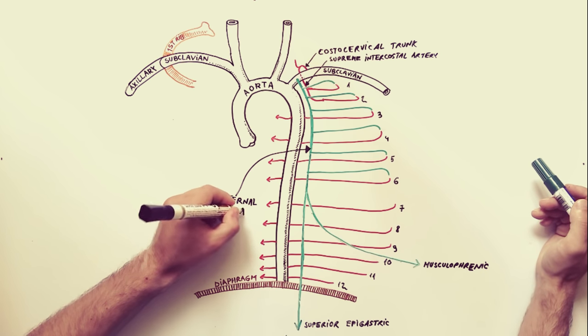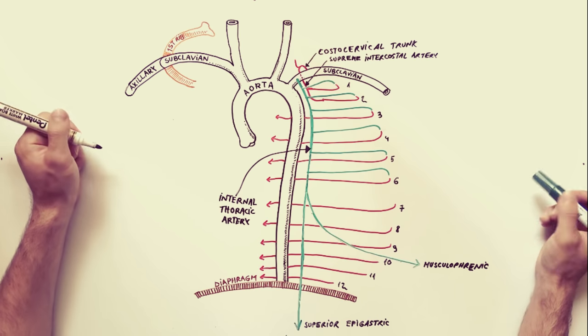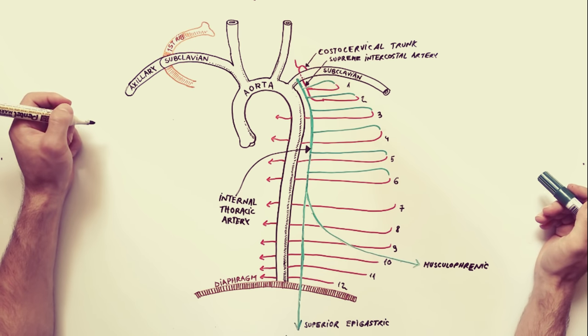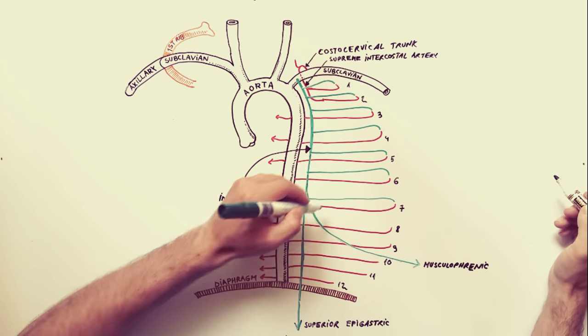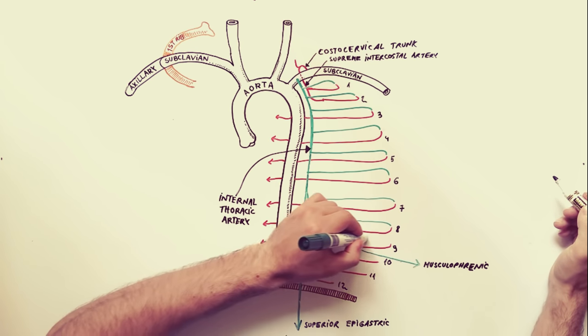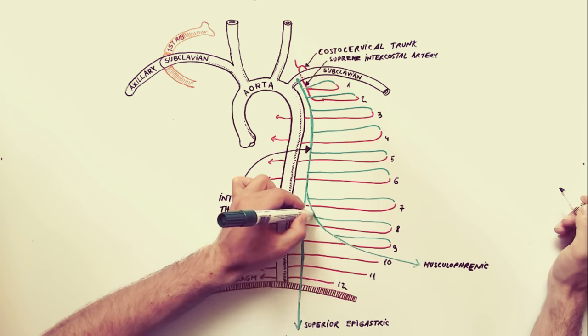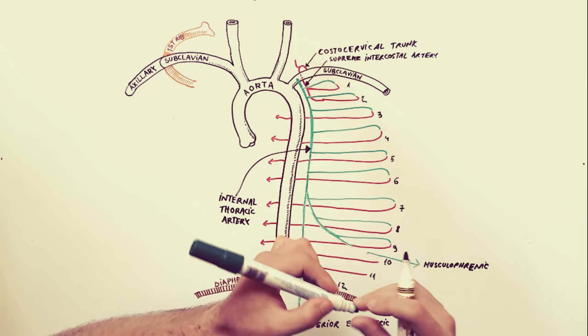Sometimes, the anterior intercostal arteries arising directly from the internal thoracic artery can be duplicated. The anterior intercostal arteries, those numbered 7, 8 and 9, are arising from the musculophrenic artery.